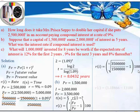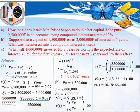Evaluating this: the 5th root of 3,500,000 ÷ 1,500,000 gives approximately 1.18466. So 1.18466 − 1 = 0.18466, and multiplying by 100 gives an interest rate of approximately 18.466%. That's how we find the rate for compound interest problems.